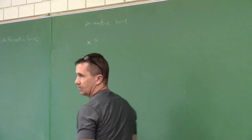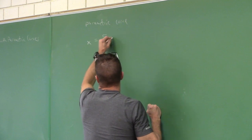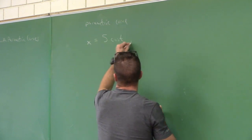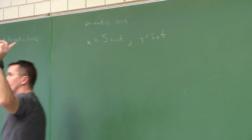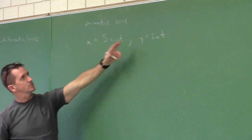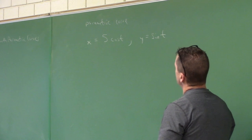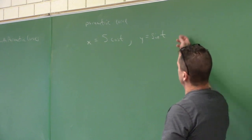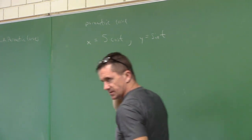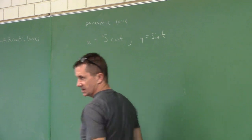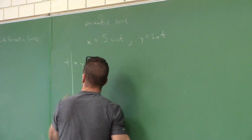I'll put down one of the most common parametric curves you see in calculus three. Here are the parametric equations defining some parametric curve. Sometimes they give you limits on how far to sketch it — from t equals negative pi over 2 to some value — but let's just sketch this curve. Remember, this method works every time: just make a table.